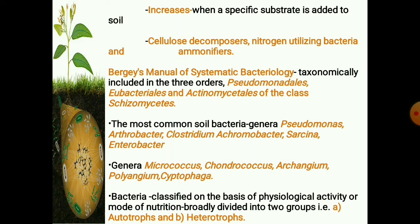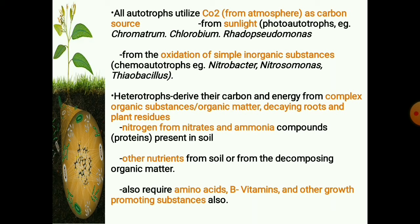Bacteria are also classified on the basis of physiological activity or mode of nutrition, especially the manner in which they obtain their carbon, nitrogen, energy, and other nutrient requirements. They are broadly divided into two groups: autotrophs and heterotrophs. All autotrophic bacteria utilize carbon dioxide as a carbon source and derive energy either from sunlight — they are photoautotrophs, example: Chromatium, Chlorobium, Rhodopseudomonas — or from the oxidation of simple inorganic substances present in the soil — they are chemoautotrophs, example: Nitrobacter, Nitrosomonas, Thiobacillus.